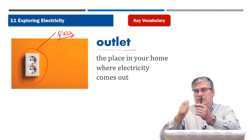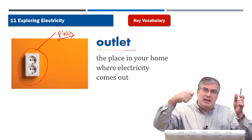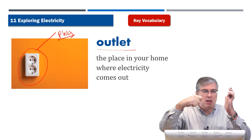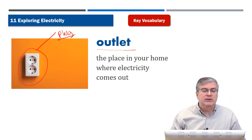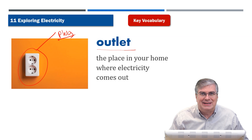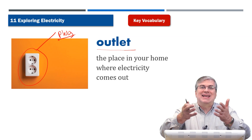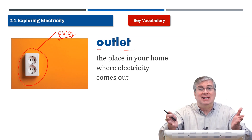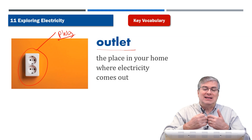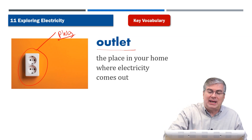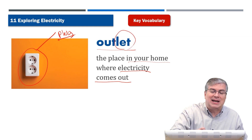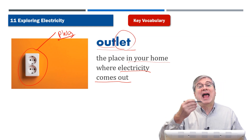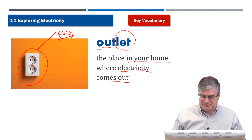Remember, the thing in the wall is also called a plug by some people — you plug a plug into a plug. But we also call it an 'outlet,' because it lets out electricity. It's the place in your home where electricity comes out. You let the electricity out — it's an outlet.